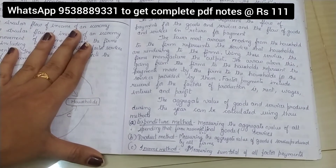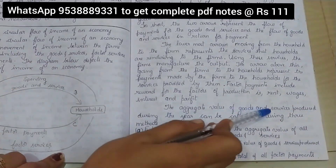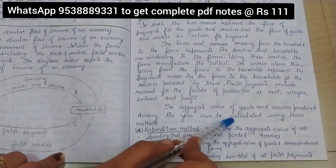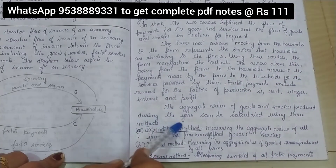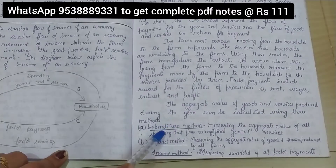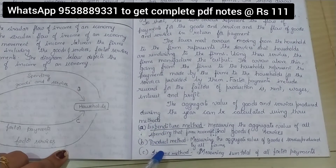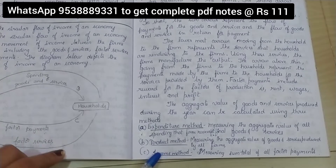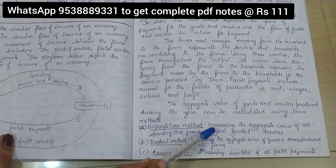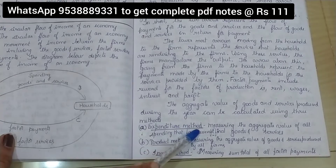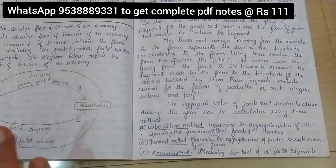The aggregate value of goods and services produced during the year can be calculated using three methods. I'll explain the meaning of the expenditure method, product method, and income method.